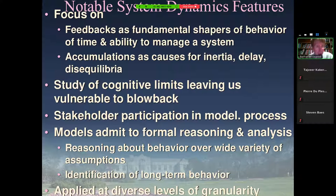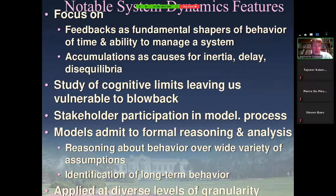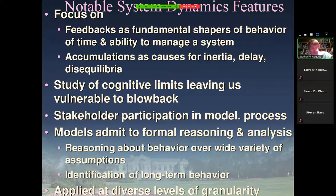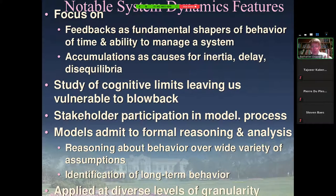System dynamics tends to focus on feedbacks — cases where A influences B and then B influences A. For example: I have a certain weight, I make efforts to lose weight, I go on a diet, restrict my food intake, and then my body — sensing it's being starved, getting less energy — reduces its metabolic rate, making it harder to lose weight, which ends up influencing my weight again. That's a feedback. Or at the most prosaic level: I'm getting hungry and I'm going to eat some food, and that will reduce my hunger. The other key component besides feedbacks is accumulations, represented by stocks.